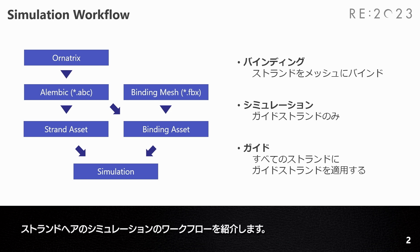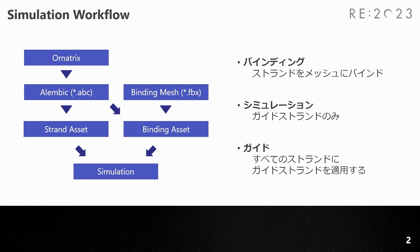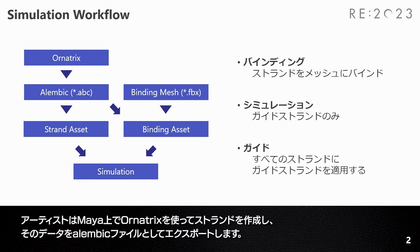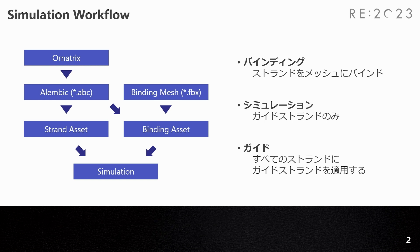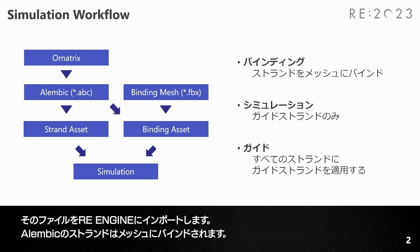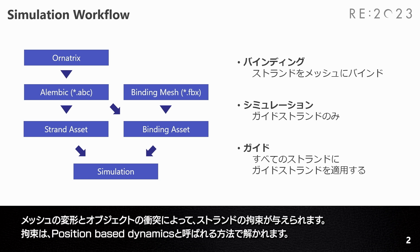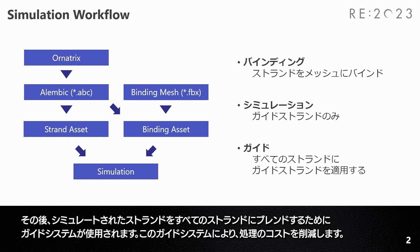First, let me introduce the strand hair simulation workflow. Artists use Ornatrix to build the strands in Maya, then export the data as Alembic files. The files are then imported to RE engine. The Alembic strands are bound to mesh. Mesh deformation and object collision give strand constraints. Constraints are solved using a method called position-based dynamics. After that, a guiding system is used to blend simulated strands to all strands, which saves on cost.